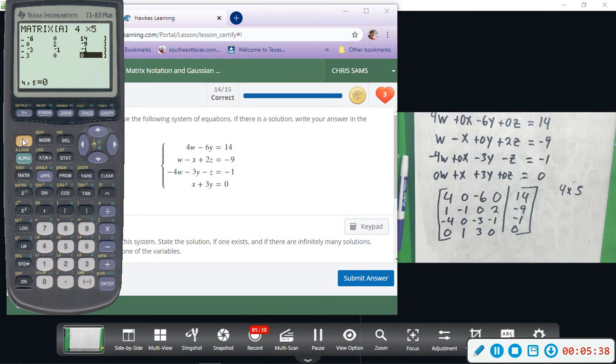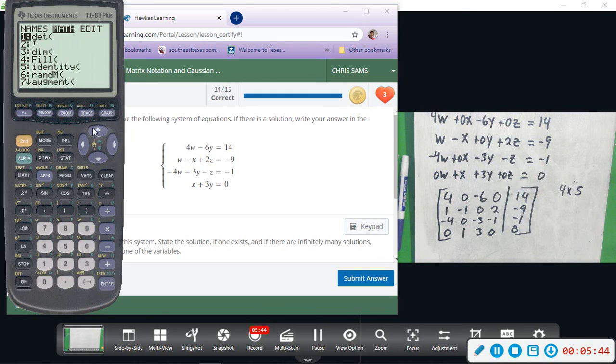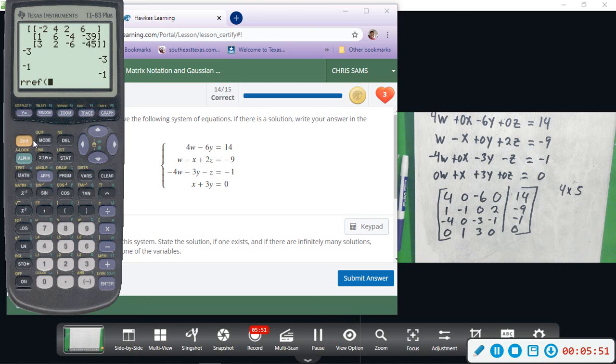Second, quit. Second, matrix. Arrow over to math, arrow up to rref for reduced row echelon form, enter. And then second, matrix once more, and then just hit enter on A and enter to solve. All right, so notice we have a 1 down the diagonal everywhere, so that means we're going to get one solution.